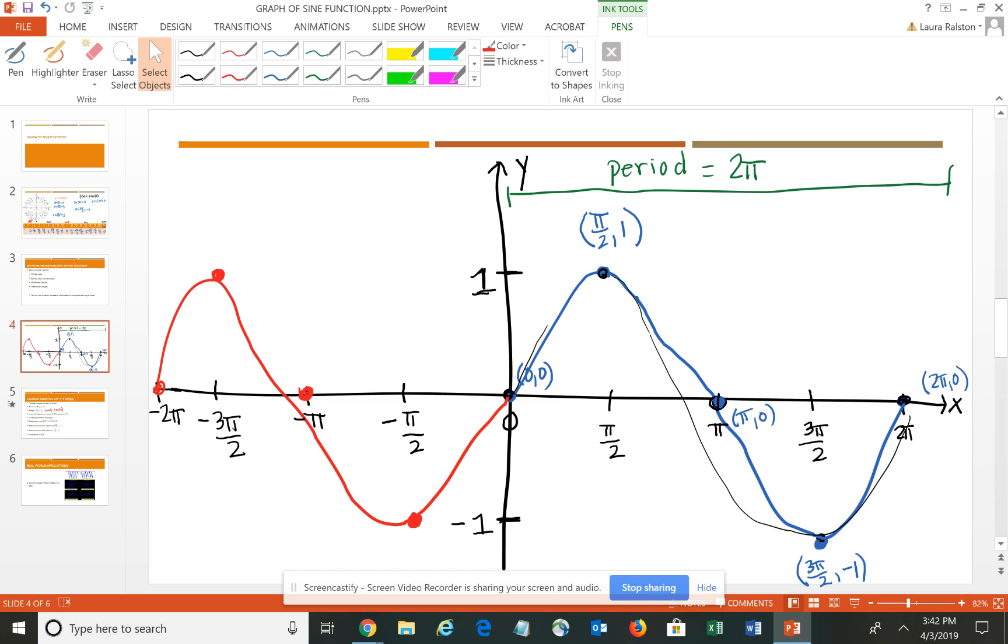At this point what you need to be most familiar with is to learn this pattern for the sine curve – this blue curve that starts at 0, ends at 0, midway is at 0, max is at 1, min is at negative 1. And that is the sine function.